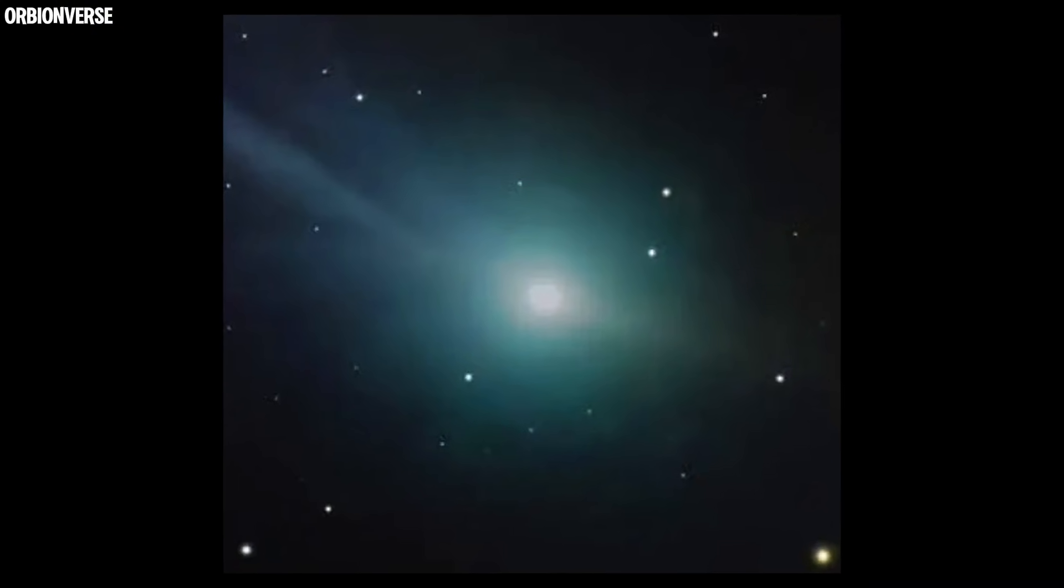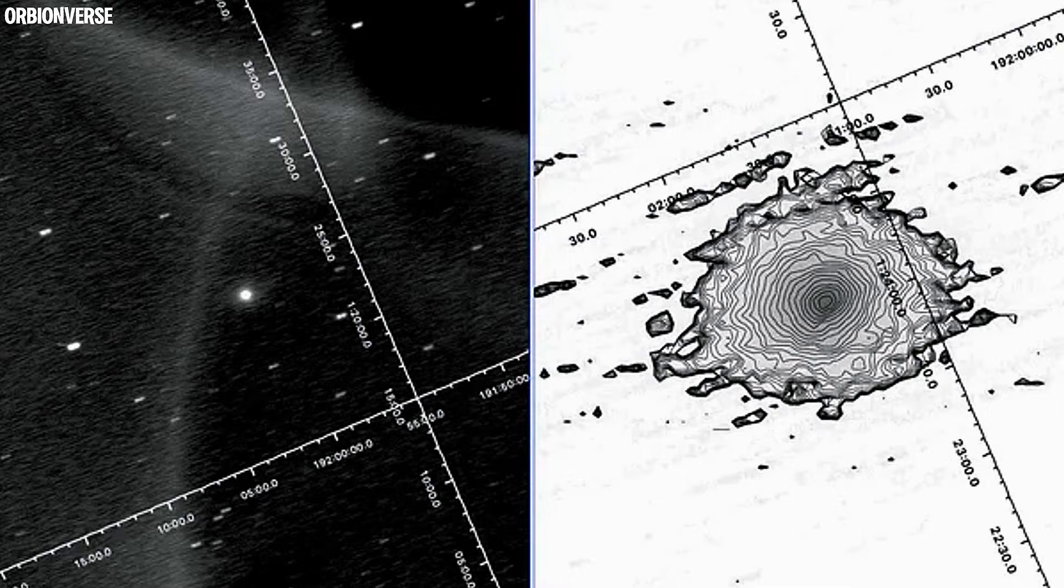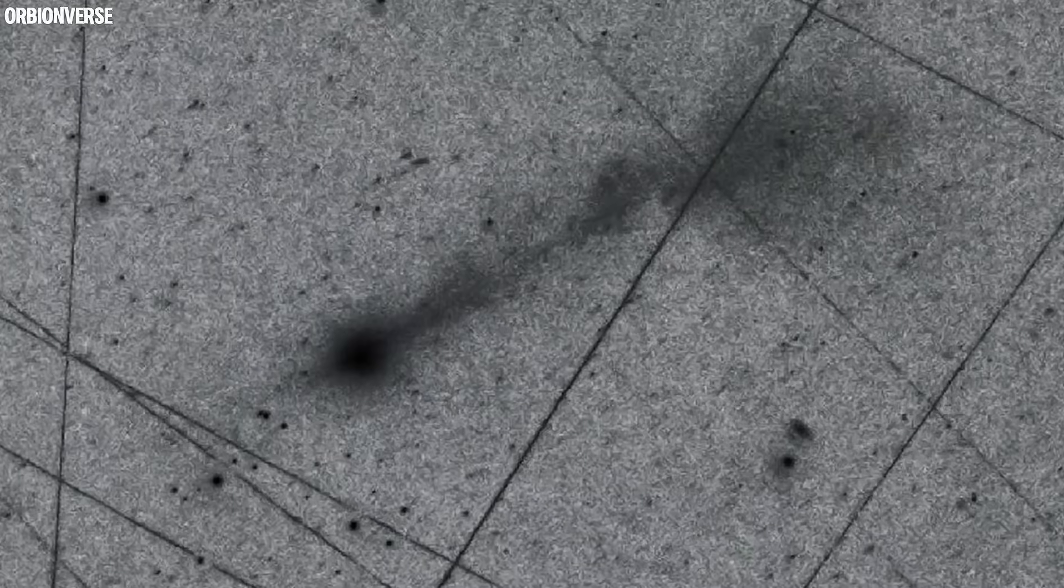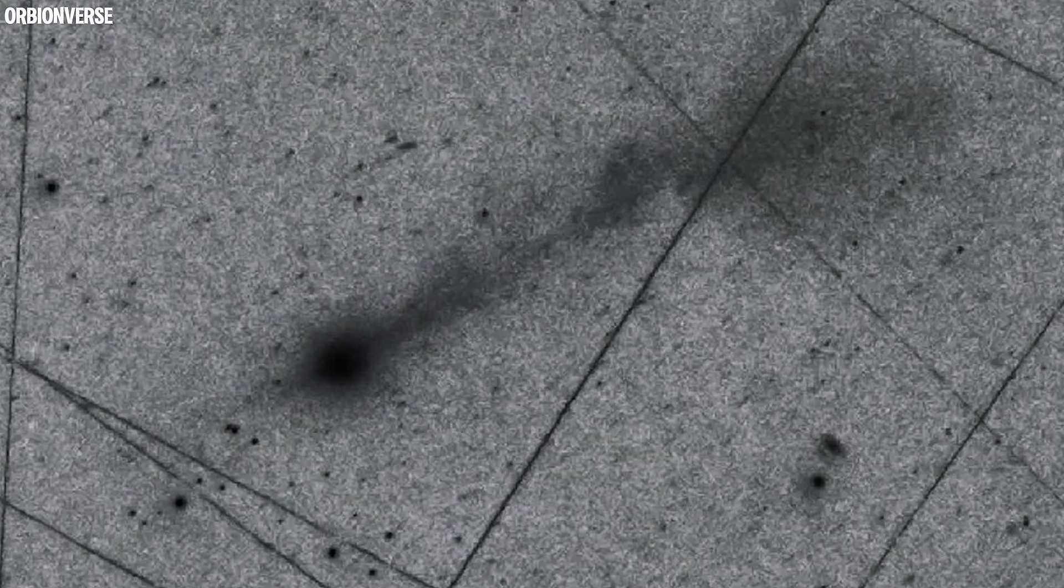The real question is, what exactly is happening inside this object? Because right now, 3i Atlas is behaving more like a fast-spinning, glowing sphere of energy than a chunk of dirty ice.